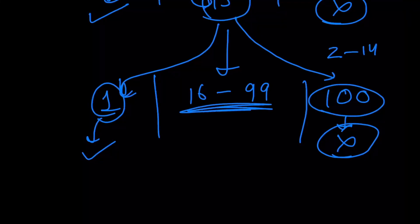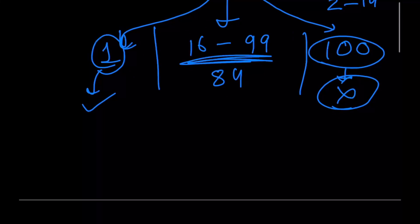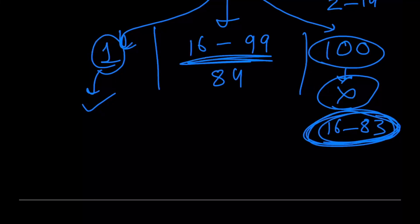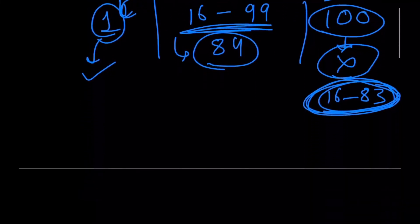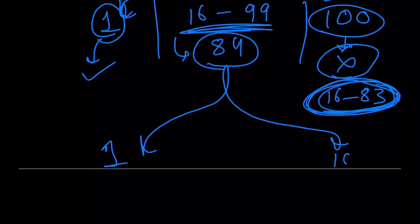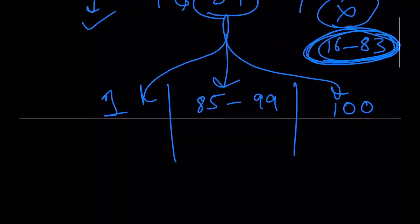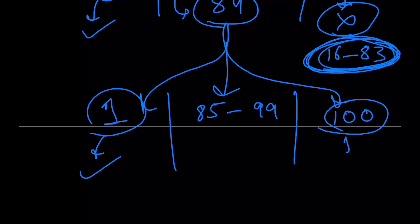Now what happens for the middle case? Let's say person 15 chose seat number 84. From person 16 all the way to person 83, all these guys get to sit on their own seats because those seats are vacant. Person 84 sees that person 15 is sitting on his seat, so he has to again pick a seat at random. Either he sits on seat number one, or he sits on seat number 100, or he chooses a seat at random from 85 all the way to 99. Again, the exact same cases — this will lead to success, this will lead to failure, and anything in between just delays the decisive moment.